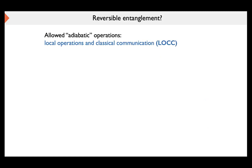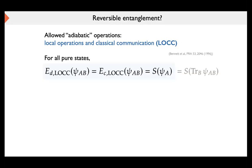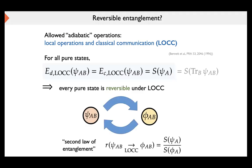To talk about reversibility we have to fix which protocols are allowed. Traditionally in entanglement theory, the first studied class of operations was local operations and classical communication (LOCC) — an operationally defined and physically well-understood class. The remarkable fact is that under LOCC, for all pure states, the distillable entanglement equals the entanglement cost, and both equal the entropy of entanglement of the given state.